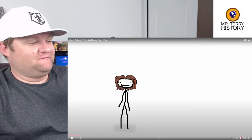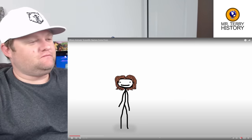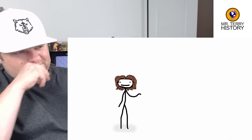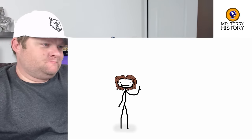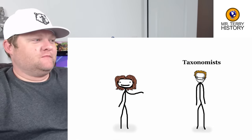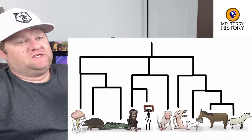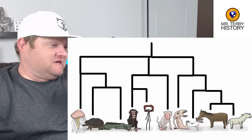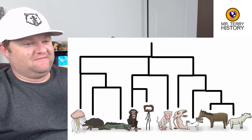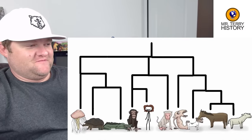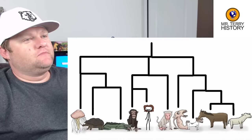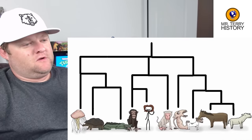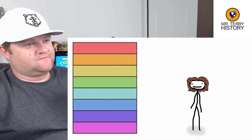We all know about the scientific names of animals, but did you ever wonder what they actually mean? To find out, we must look to taxonomists — they're the guys responsible for the systems of nomenclature we use to classify organisms, and boy, are they convoluted.